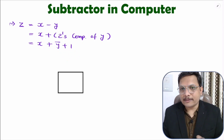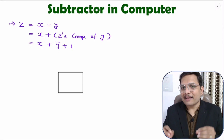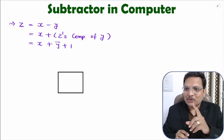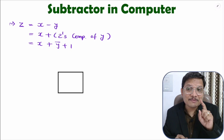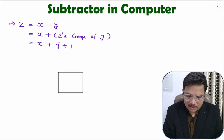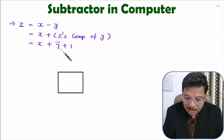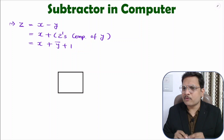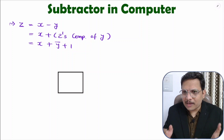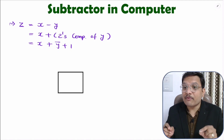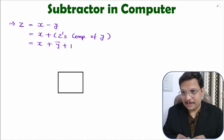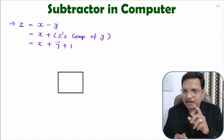Now, I have seen students thinking that something plus something plus one equals one, but remember this is modulo-2 addition — this is not a boolean function. So z equals x plus y-bar plus one. This is not a boolean function. I have seen students saying that if you write x plus one, that is always one as per boolean function — but this is modulo-2 addition, not a boolean function. First of all, remember this.